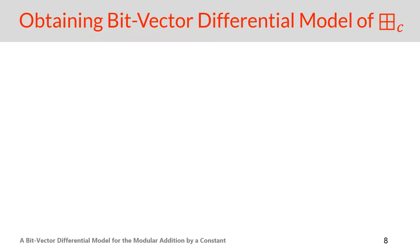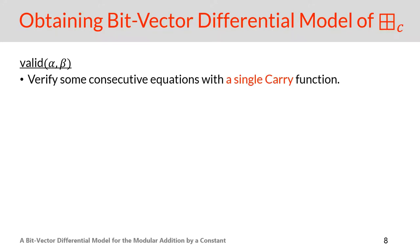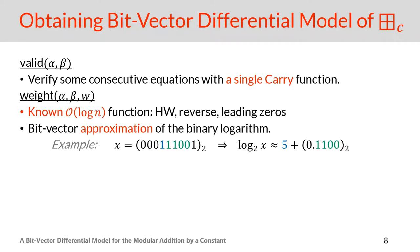We took Machado's algorithm as an inspiration and obtained an efficient and appropriate bit-vector differential model for constant addition. The construction of our model is long and technical, so here we just provide some key points. For the validity part, we used a single carry function to check and verify whether in every position the input and output differences are valid or not. For the weight part, we used known efficient O(log n) bit-vector functions such as Hamming weight, reverse of the bit order, and leading zeros, alongside carry functions which can be created using basic operators.